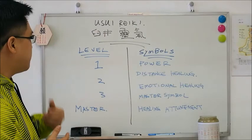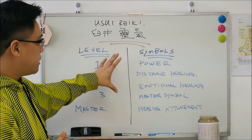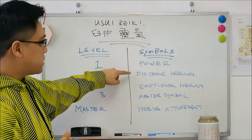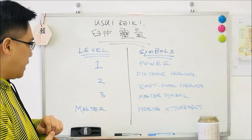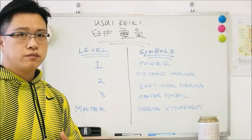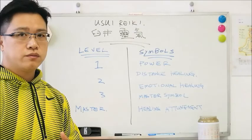This has been the introduction to the Usui Reiki system. You have level 1, 2, 3, and master level. There are mainly four symbols commonly used: the power symbol, the distant healing symbol, and the emotional healing symbol — learned in level 2 — and the master symbol, learned in level 3. There are also several additional symbols learned at master level for attunement purposes and different functions.